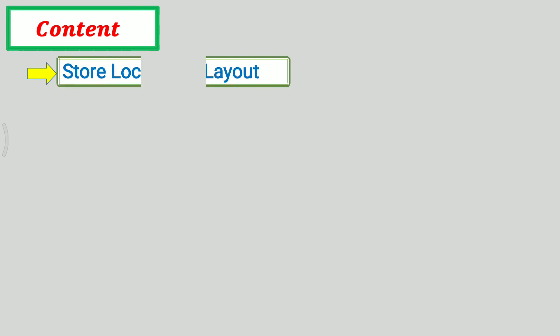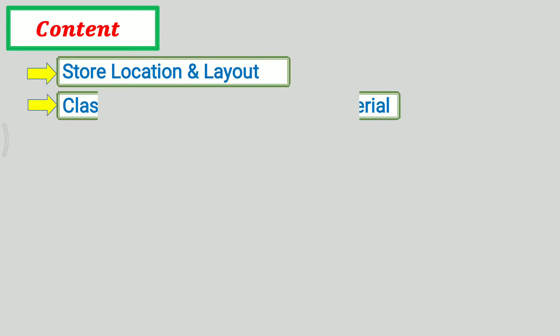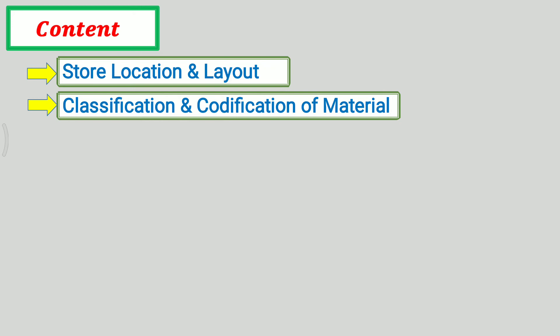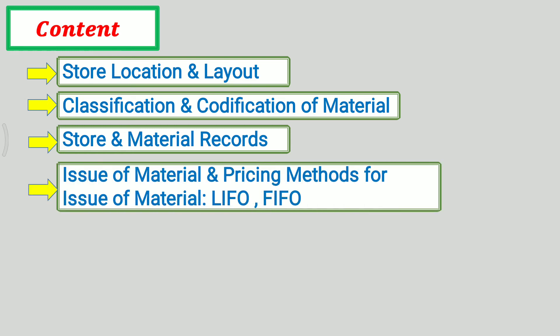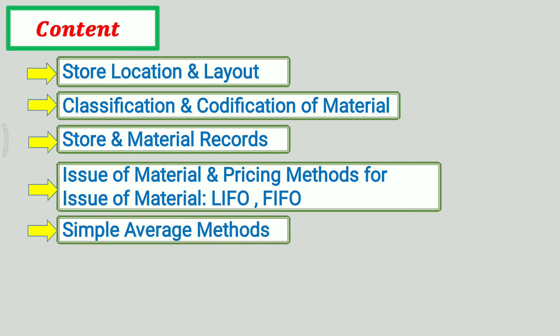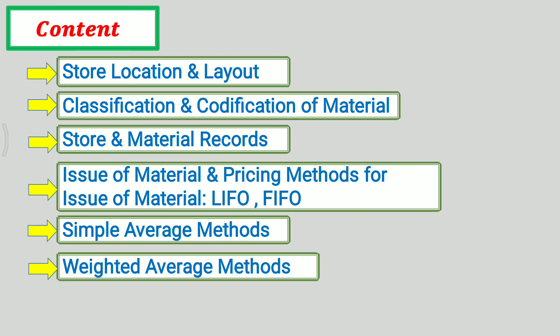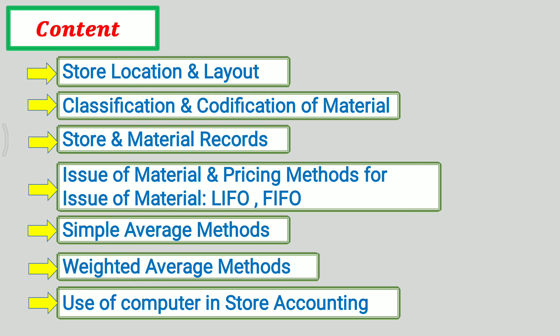The content of this unit includes: Store Location and Layout, Classification and Codification of Material, Store Material Records, Issue of Material and Pricing Methods for Issue of Materials, i.e. LIFO Method, FIFO Method, Simple Average Methods, Weighted Average Methods, and Use of Computer in Store Accounting.